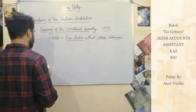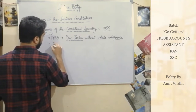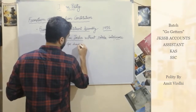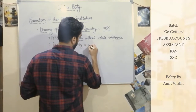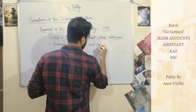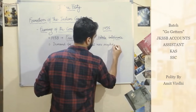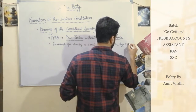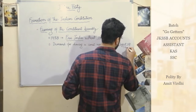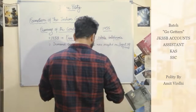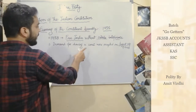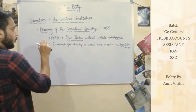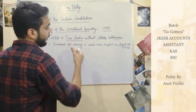The demand for a constitution was accepted in 1940 in the August Offer. They declared that we would have adult franchise and would constitute the Constituent Assembly.